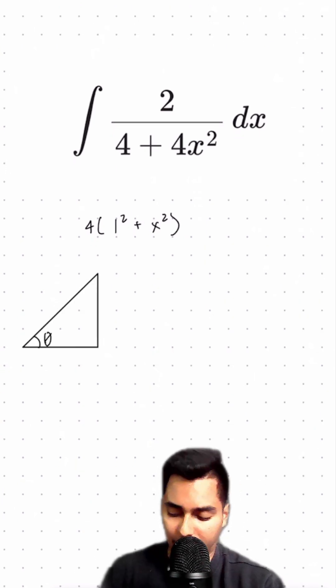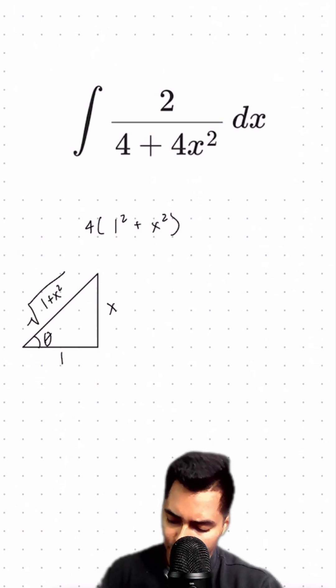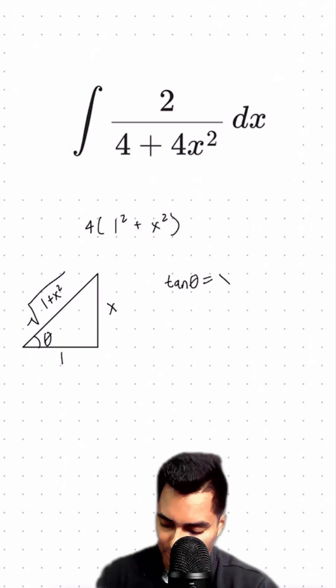I'm going to define theta here. The adjacent side is 1, the opposite side is x, and the hypotenuse is the square root of 1 plus x squared. So tangent of theta equals opposite over adjacent, which is x over 1, or just x.